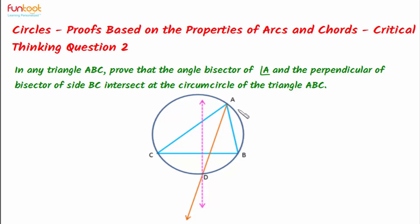Let's do a problem. We have to prove that the bisector of angle A — this orange line — and the perpendicular bisector of side BC — this pink line — intersect at the circumcircle of triangle ABC. We have to prove that these two intersect at a point D which lies on the circumcircle of triangle ABC.